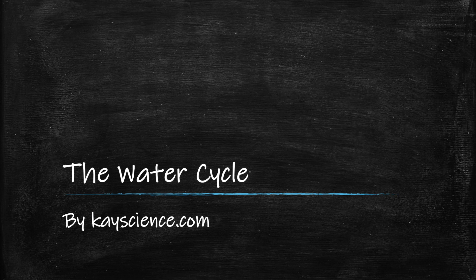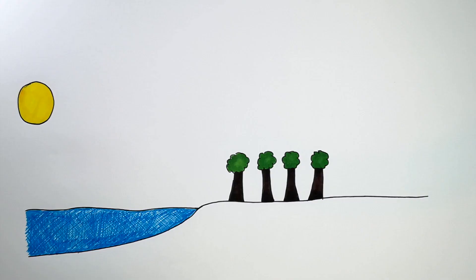The Water Cycle by kscience.com. The Water Cycle shows how water is cycled around our world via non-living and through living organisms. Most of the water on earth is found in our seas and oceans.